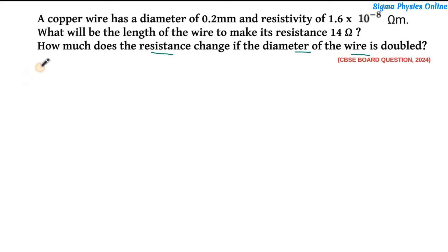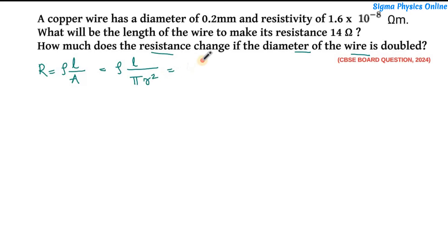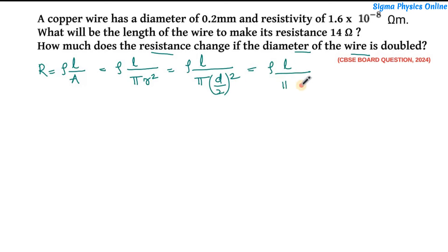We will find out what will be the change in resistance if the diameter is doubled. Let's write down the formula for resistance: R = ρL/A = ρL/(πr²) = ρL/π(d/2)² = ρL/(πd²/4). Let this be equation 1 — the resistance expressed in terms of the diameter of the wire.